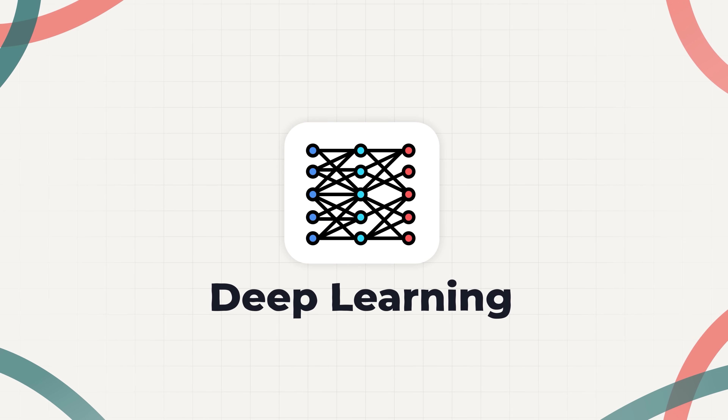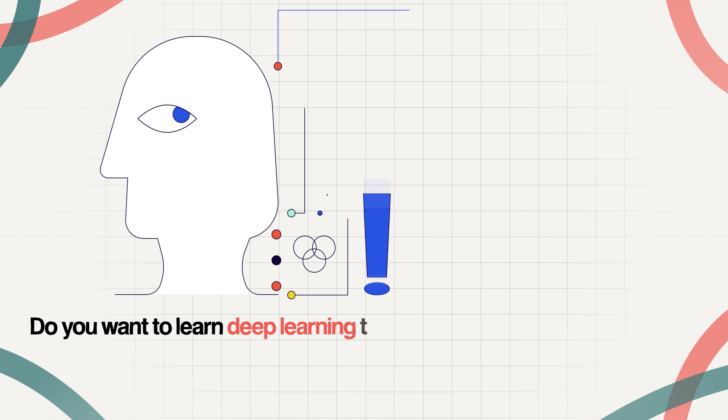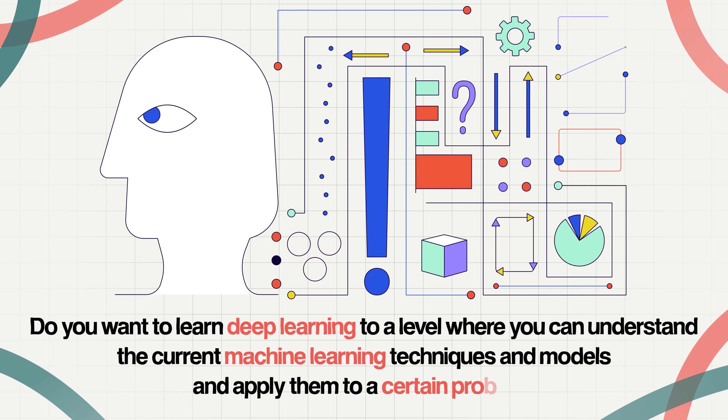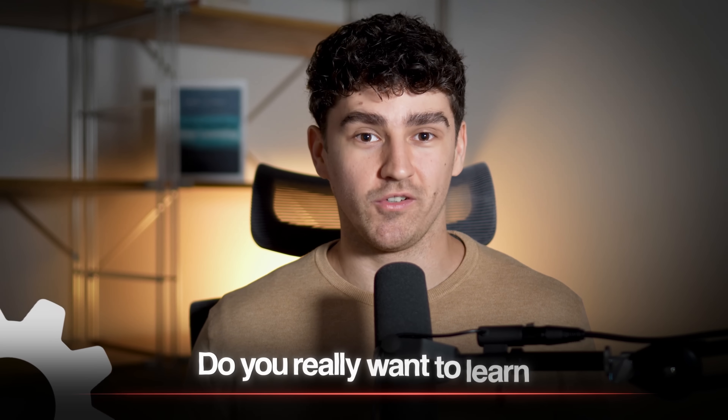But now comes the really exciting part, and also the part where you have to make an important decision. Do you want to learn deep learning to a level where you can understand the current machine learning techniques and models and apply them to a certain problem? Or do you really want to learn deep learning — looking at non-conventional models and applying the fundamental math in more complex ways, with a focus on a bit more theory? Machine learning is still a very new and empirical field, which often requires much more other skills than just an understanding of machine learning theory.